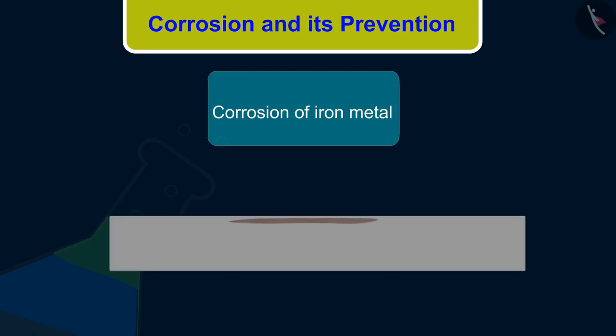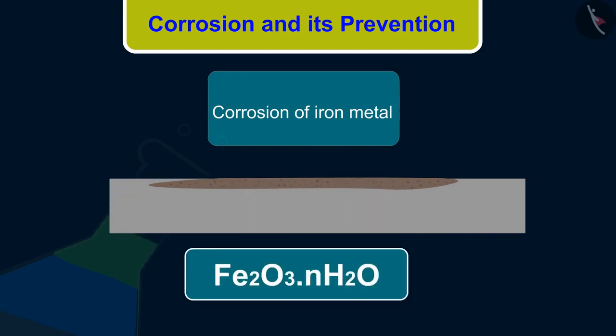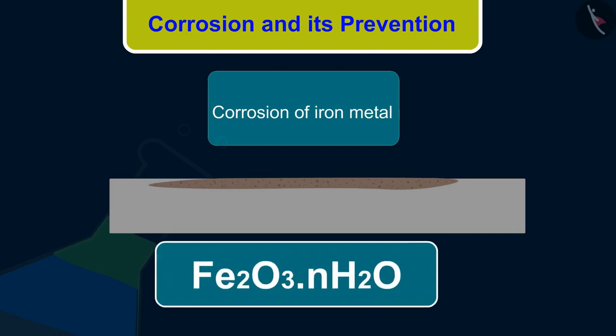Rust is soft and porous and it gradually falls off from the surface, and then the iron below starts corroding. During rusting of iron, iron metal combines with oxygen in air in the presence of water to form hydrated iron oxide: Fe2O3·H2O.